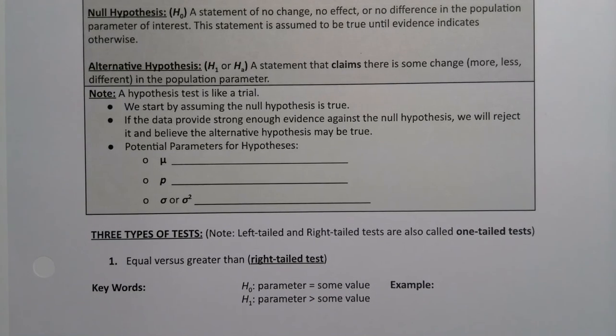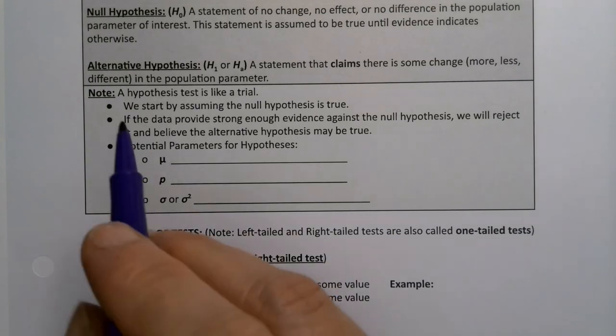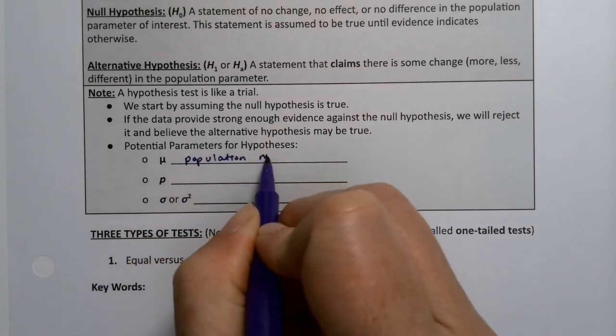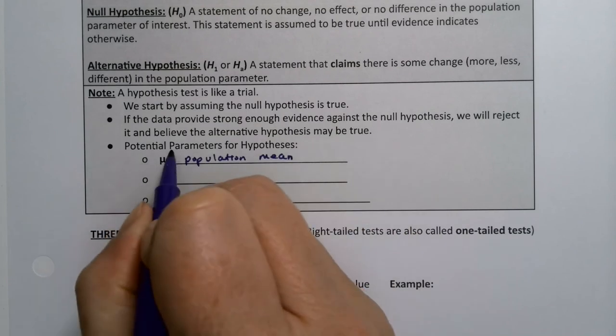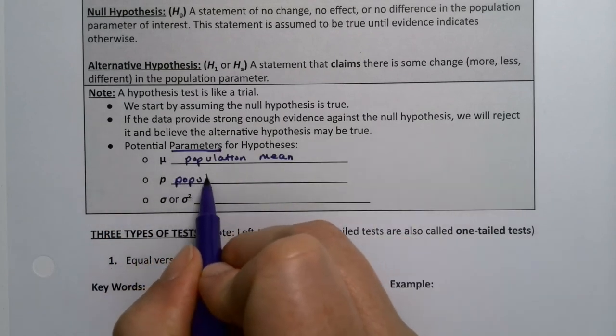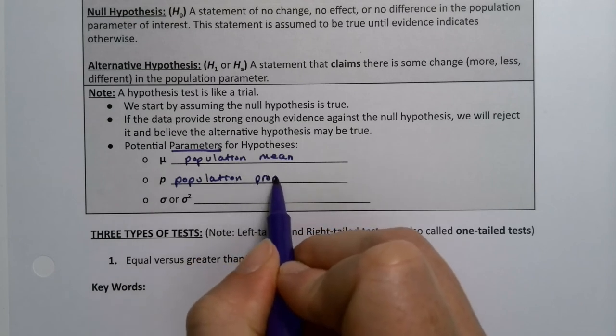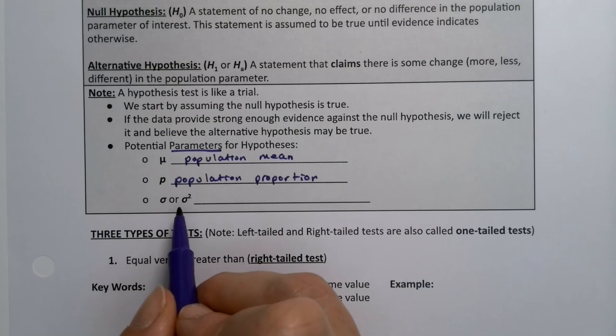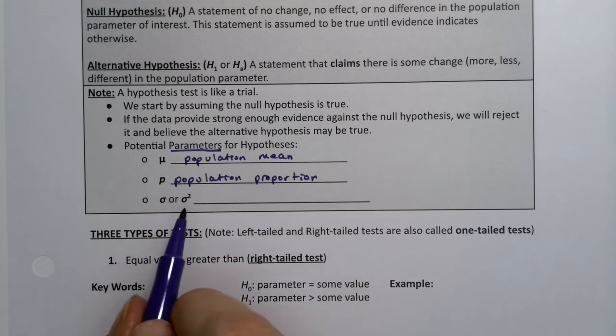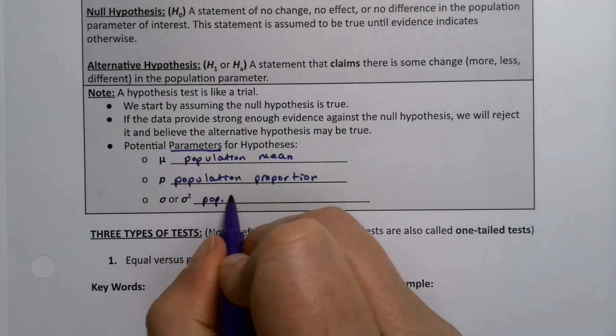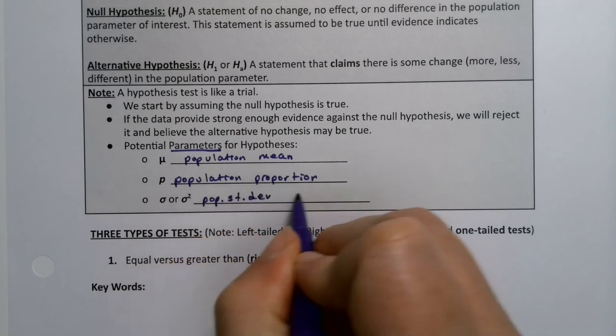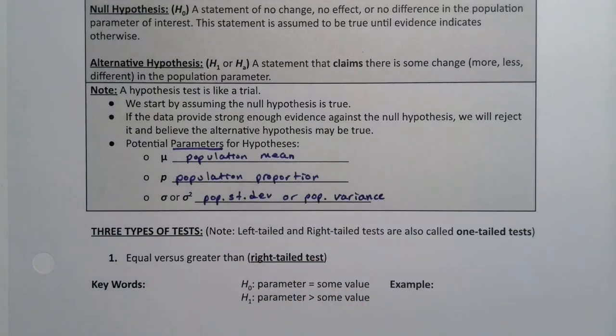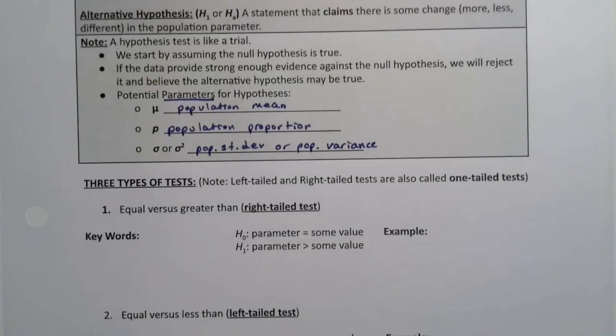The potential parameters of interest for hypotheses are μ (population mean) and p (population proportion), and these are the ones we're going to actually work with. We will work with σ or σ² (standard deviation or variance), but they're from the section that's been cut from this chapter because hypothesis tests for population standard deviation or variance are actually a little bit more difficult. So we're not going to do those unless otherwise stated.